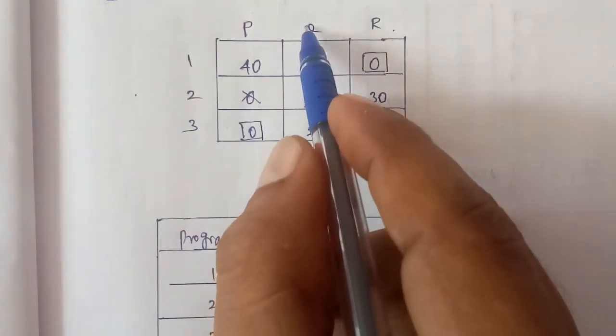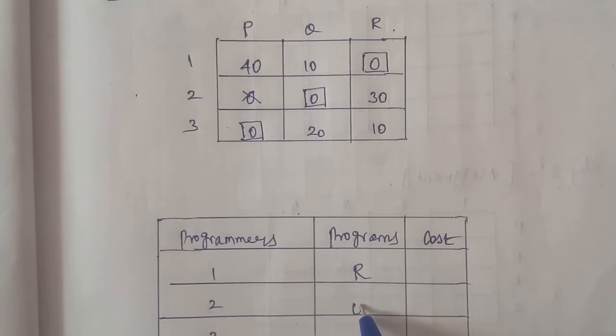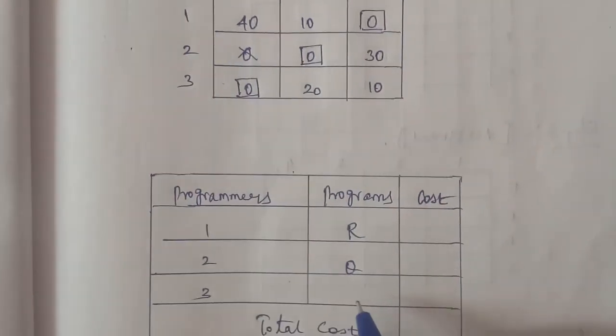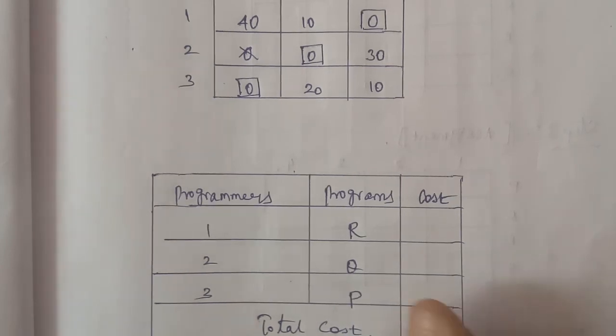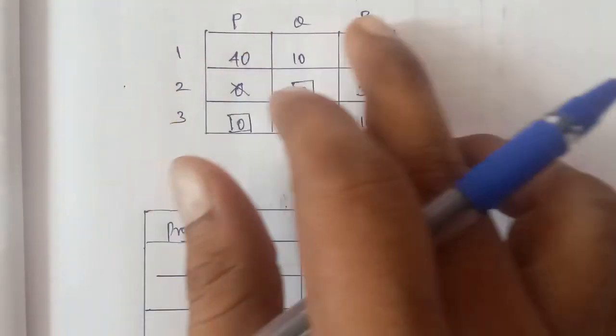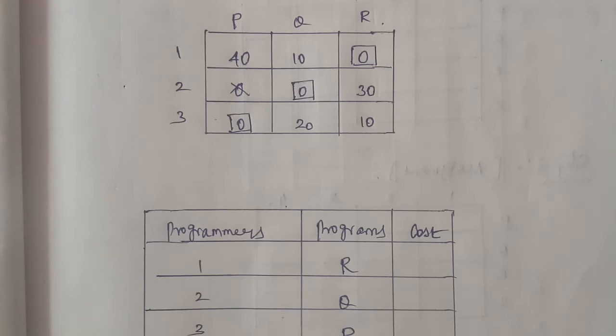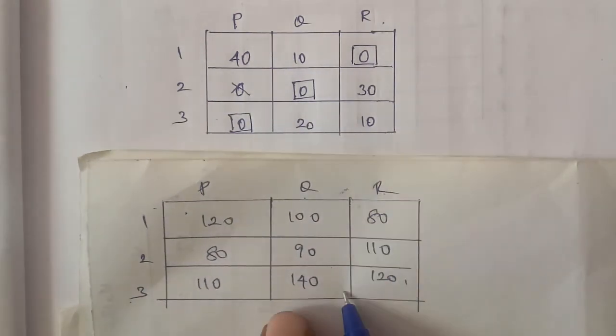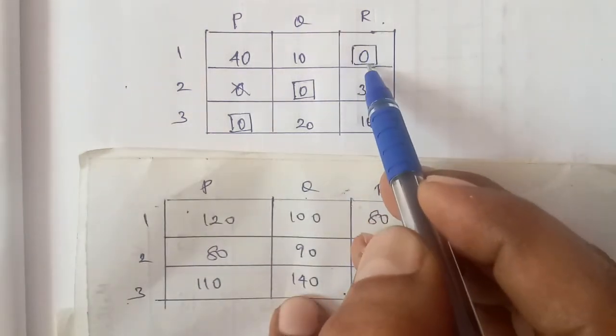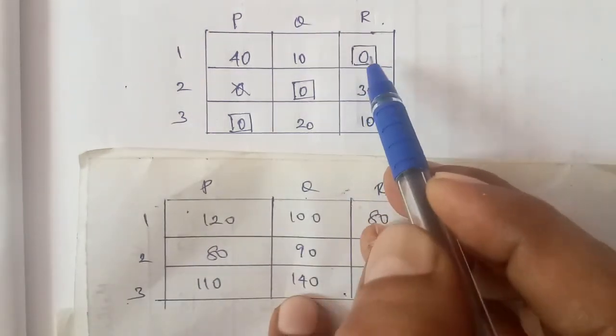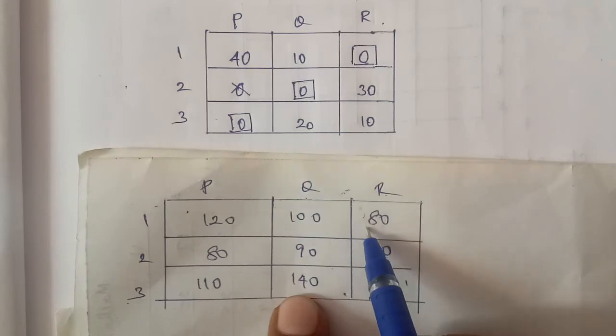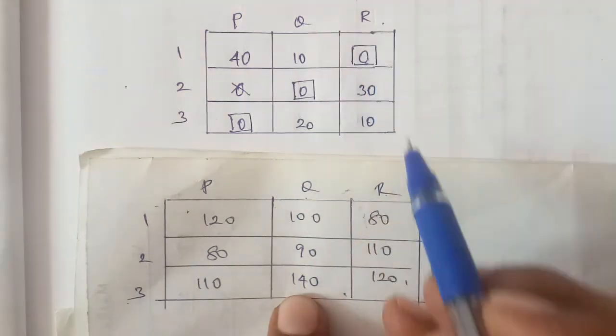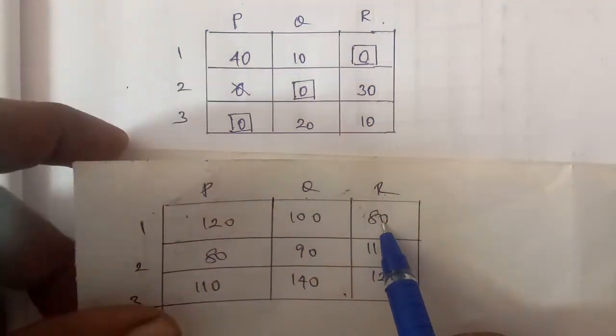First row to R, second row to Q, third row to P. Answer: Box number one entry zero, given question value is 80, so 80 entry.